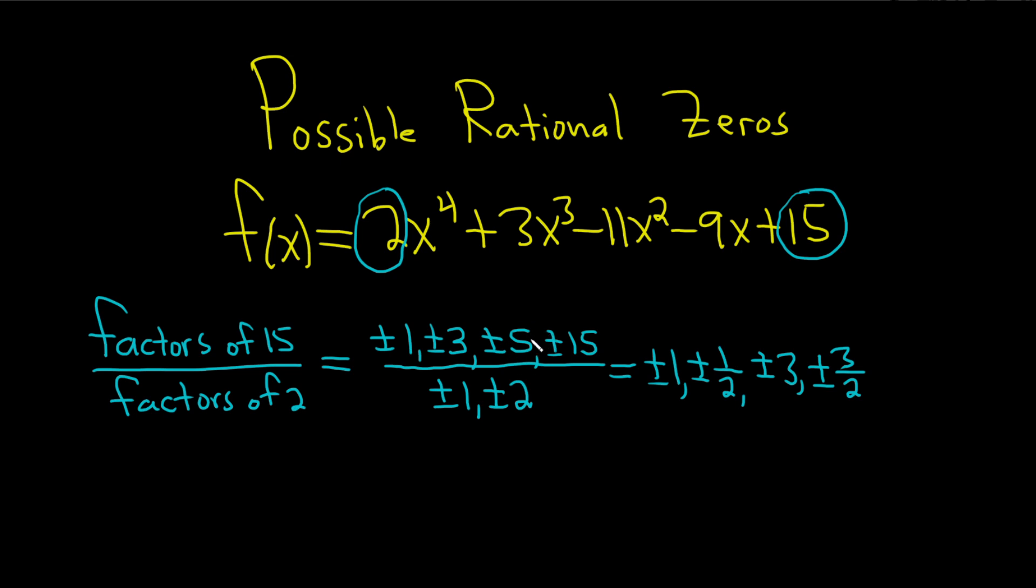Then we go to the 5. 5 over 1 is 5. And then 5 over 2 is just 5 over 2.